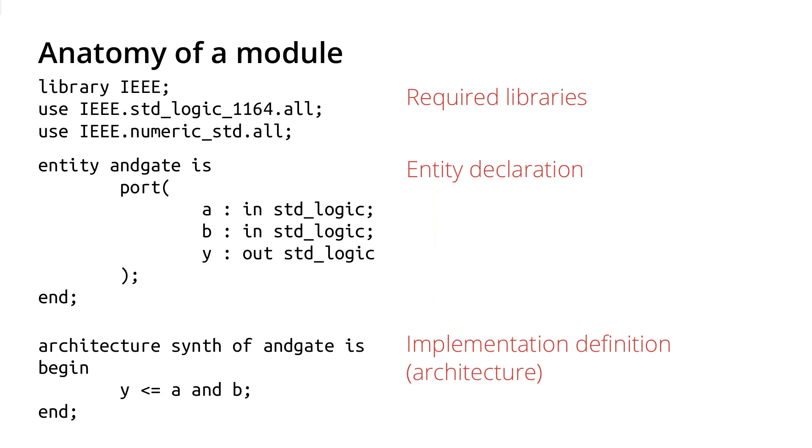And then finally we can fill in the architecture which defines what goes inside that box, how the internals of that box operate. In VHDL we do that starting with the architecture keyword. Then you're going to pick some name. Here I've chosen the name synth, referring to synthesis that this is an architecture I could synthesize into an actual hardware design.